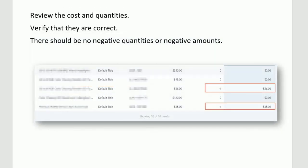One thing to note is that you do need to review the cost and quantities for each of your SKUs. Verify that they're correct. There should be no negative quantities or negative amounts. As we can see here, we have a couple of issues we need to deal with, because we shouldn't have any negative amounts. If you do have negative amounts, then the inventory amount is not going to be correct.